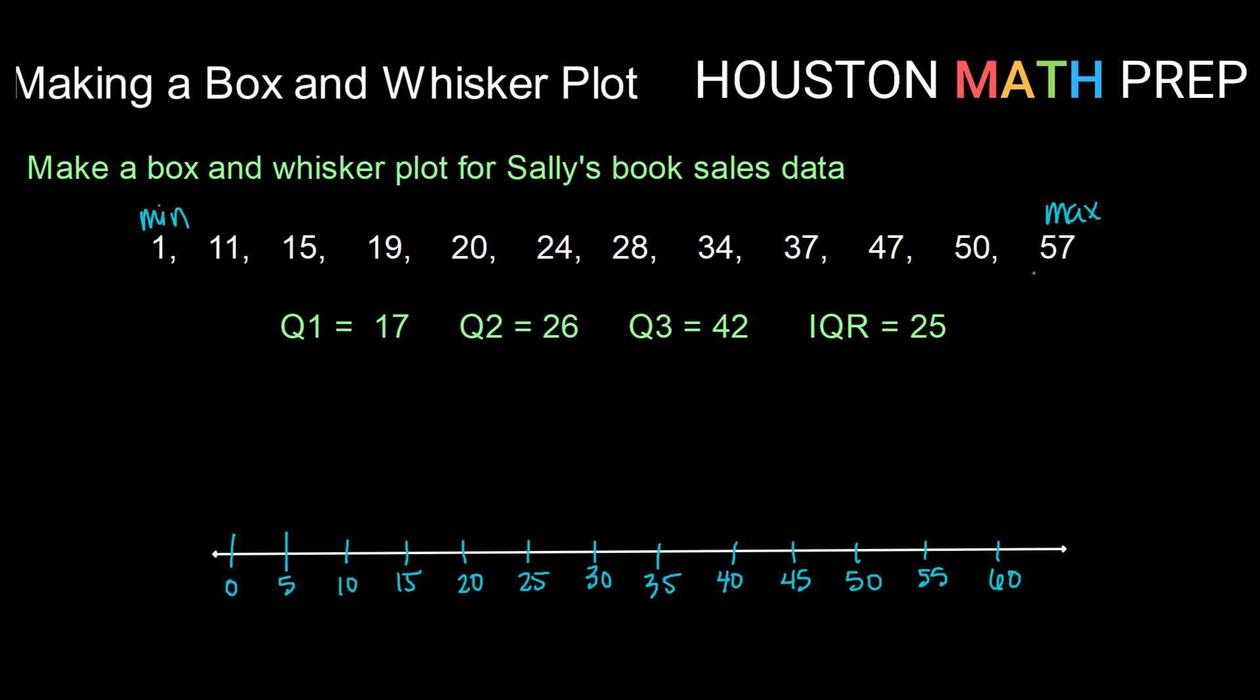So I'm going to go ahead and start by plotting my Q1 and my Q3 so I can start creating my box. So a Q1 of 17 for me would be about right here. So I'm going to go ahead and draw a vertical line there. And 42 would be about right here. So I'll draw an equal size vertical line there and connect as straight as I can to my box. Alright, so I've got my box from Q1 to Q3.